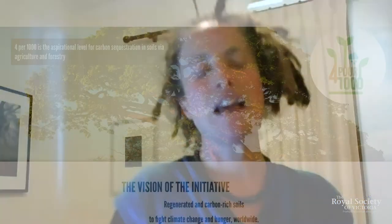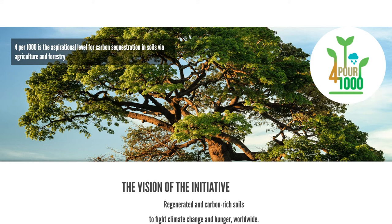Why is it called Four Per Mil? This initiative was launched at the Paris climate talks and was initially supported by the French government. Four per mil is the way they express 0.4 of a percent — less than half of a percent — which is the aspirational level for carbon sequestration in soils via agriculture and forestry.